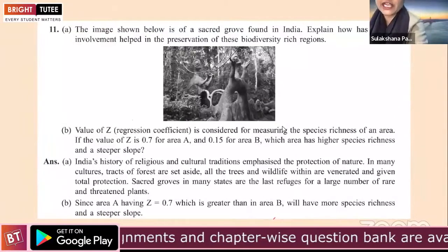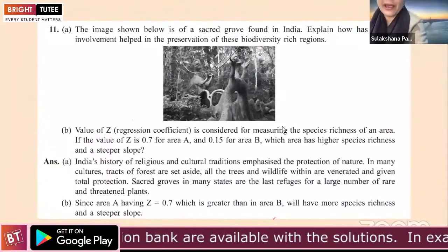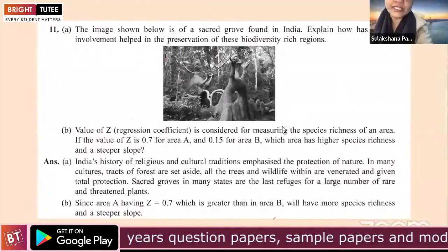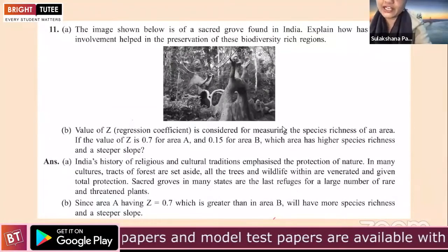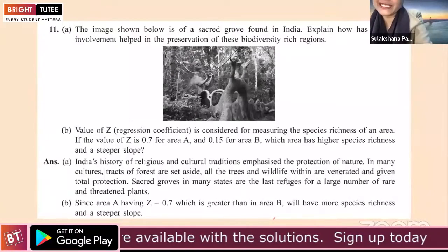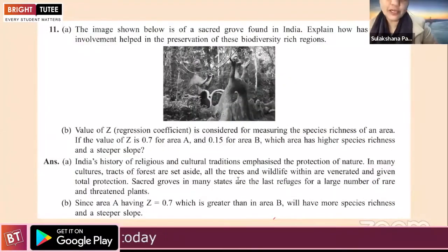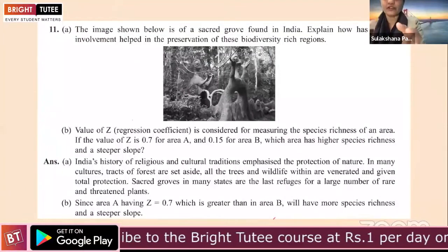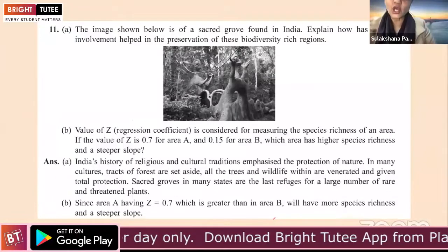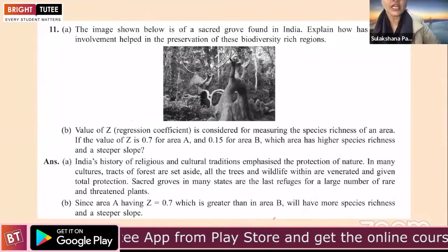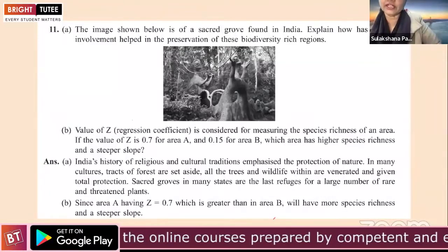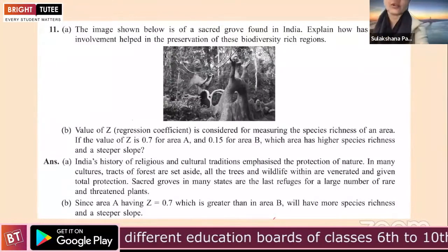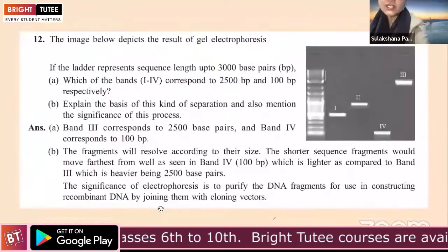Question 11 involves images of a species found in India: 'Explain how human involvement is helping the preservation of biodiversity-rich regions.' Another part involves a graph showing regression coefficient and species richness — the value of z is 0.7 for area A and 0.15 for area B. Students are asked which area has higher species richness and a steeper slope. Emphasize NCERT back-exercise questions for biodiversity, with supplementary questions from other books for case-type practice.